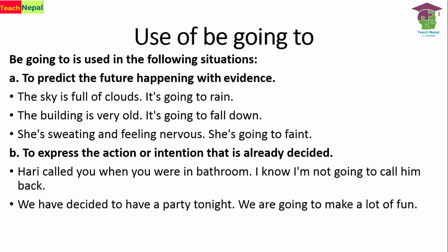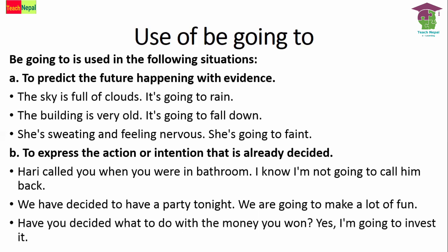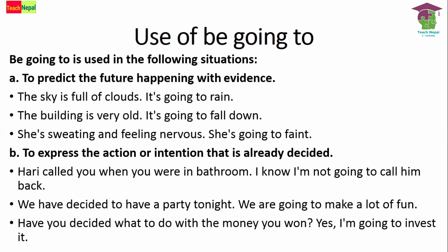'We have decided to have a party tonight — we are going to make a lot of fun.' 'Have you decided what to do with the money you won? Yes, I'm going to invest it.' If someone says 'I will invest it,' that shows no prior plan; but if someone says 'I'm going to invest it,' we understand the person has already decided. So 'will' is for unplanned decisions and 'be going to' is for prior plans.